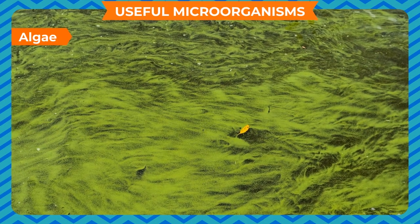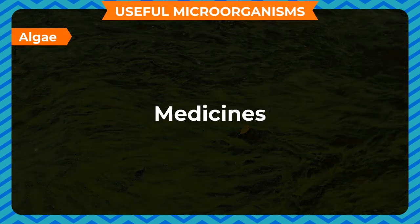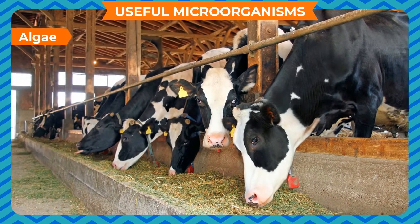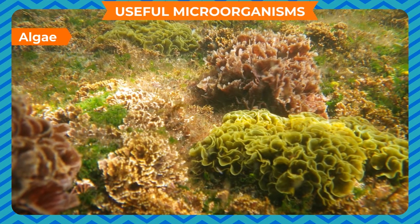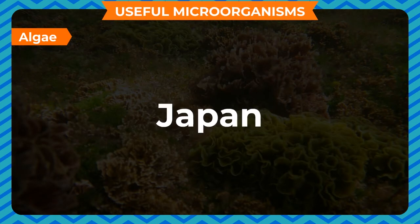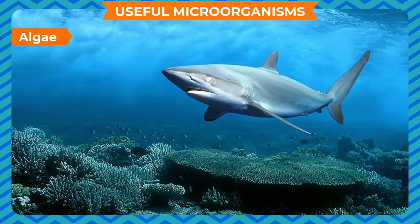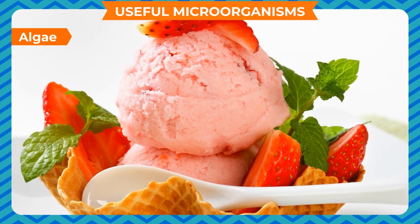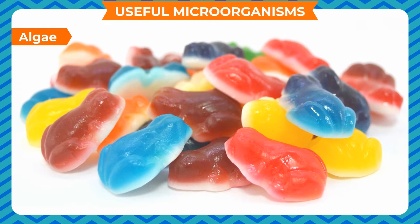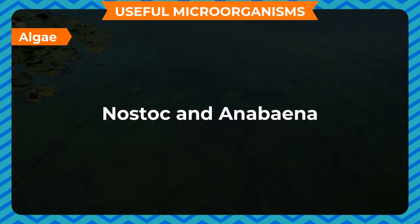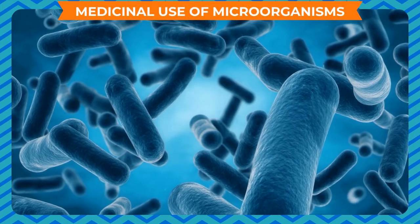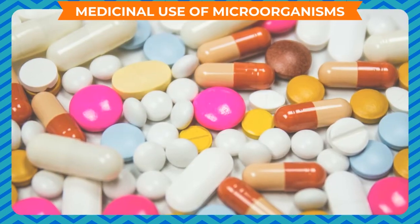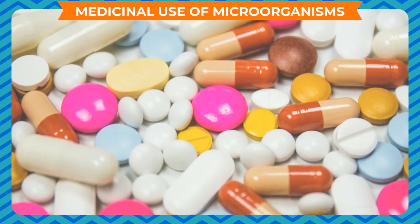Algae like Chlorella are used in preparing antibiotics and various medicines. Laminaria, a multicellular alga, is used as cattle food. Seaweeds like Porphyra are used as a food item in countries like Japan. Fishes feed on freshwater and marine algae. Algae agar, used in ice cream and jellies, is obtained from seaweeds. Blue-green algae like Nostoc and Anabaena are good nitrogen fixers and make the soil fertile. Agar and algin are also obtained from algae.